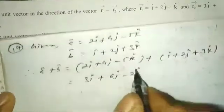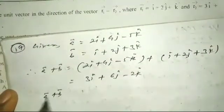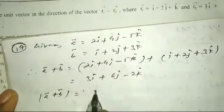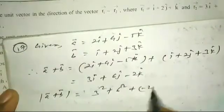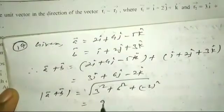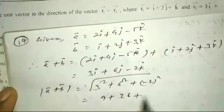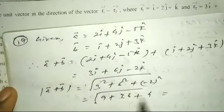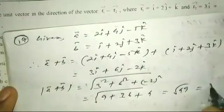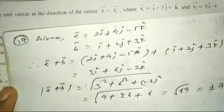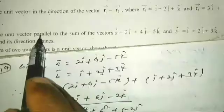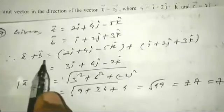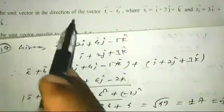Now the magnitude of a vector plus b vector: square root of 3² plus 6² plus (-2)², which is square root of 9 plus 36 plus 4, equals square root of 49, equals 7. The unit vector parallel to a plus b is needed.